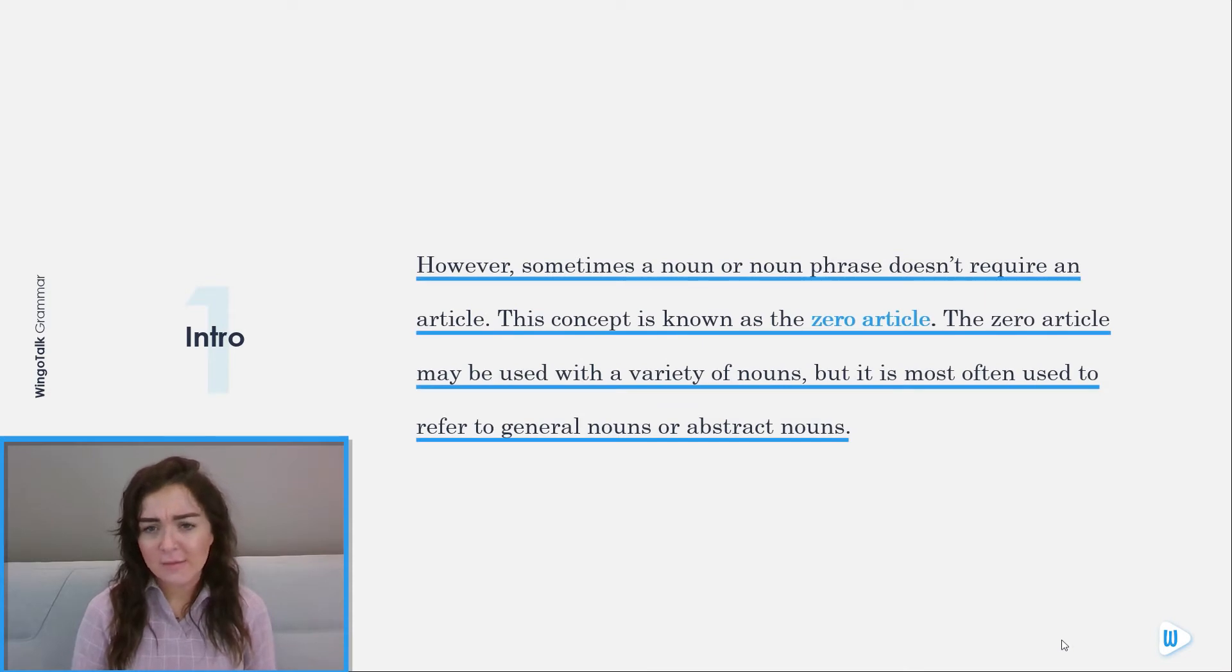However, sometimes a noun or noun phrase doesn't require an article. This concept is known as a zero article. The zero article may be used with a variety of nouns, but it is most often used to refer to general nouns or abstract nouns.